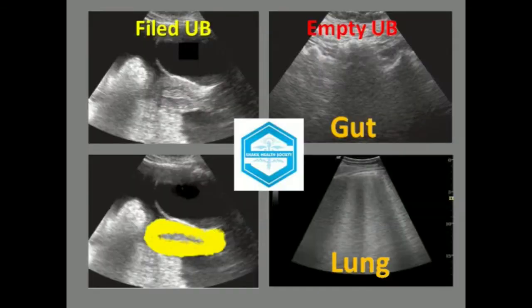The sound wave propagation or speed has an effect on images. Air-filled lungs and gut containing air conduct sound so poorly that they cannot be imaged with ultrasound instruments. A neighboring soft tissue or fluid-filled organ must be used as a window through which to image a structure that is obscured by the air.